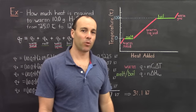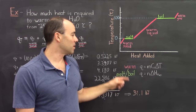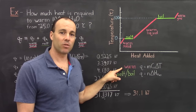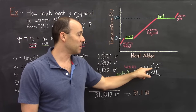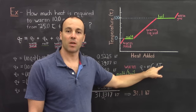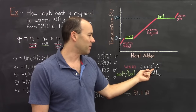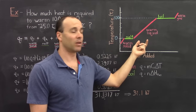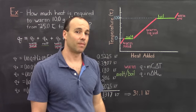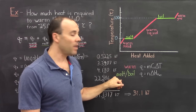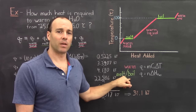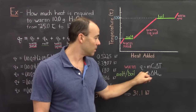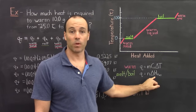When a substance is warmed, the expression for calculating the energy is the mass times the specific heat times the change in temperature. The specific heat needs to be the specific heat of either the solid, the liquid, or the gas — whichever you're calculating at the time. And to change the phase, whether it's melting or boiling, it's the number of moles times the heat of fusion or the heat of vaporization.